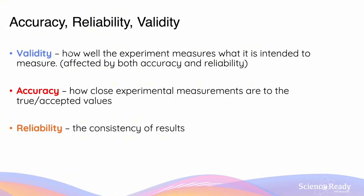Validity refers to how well the experiment measures what it's intended to measure — that is, the aim of the experiment. Generally speaking, it's affected by both accuracy and reliability. Accuracy of results refers to how closely the experimental measurements or data compare to the true and accepted values, and reliability refers to the consistency of results.